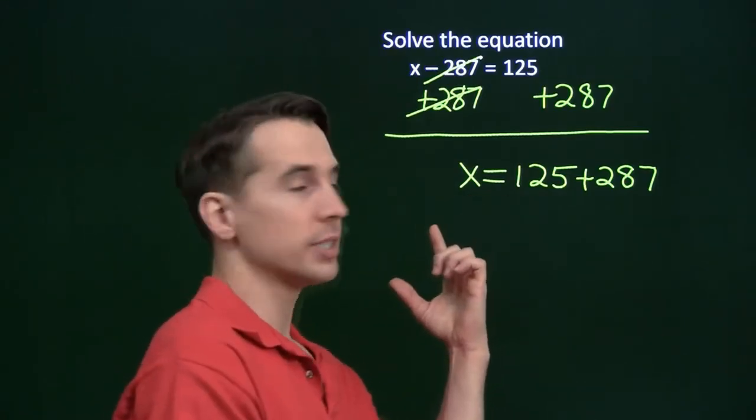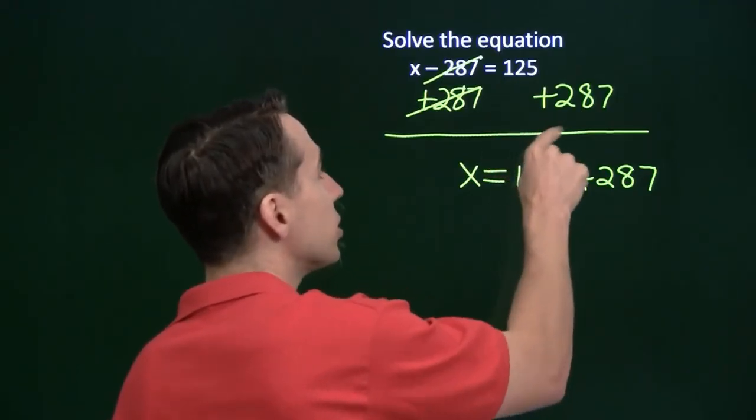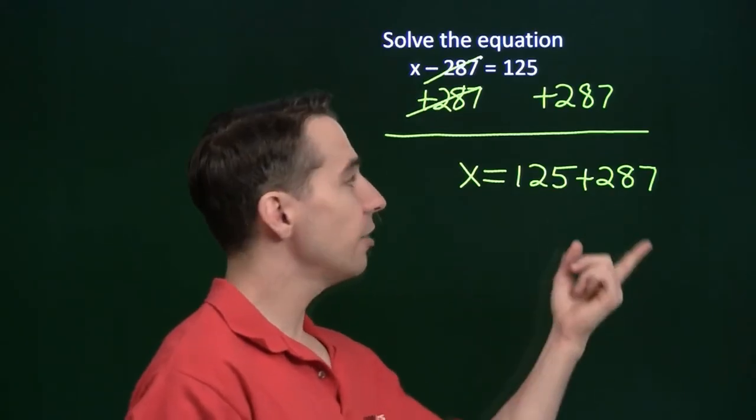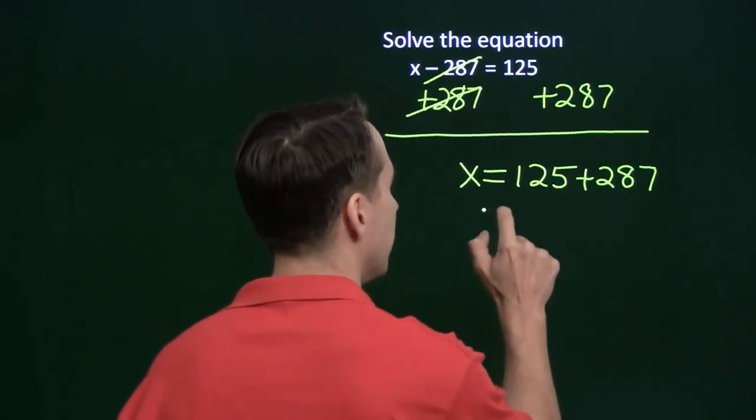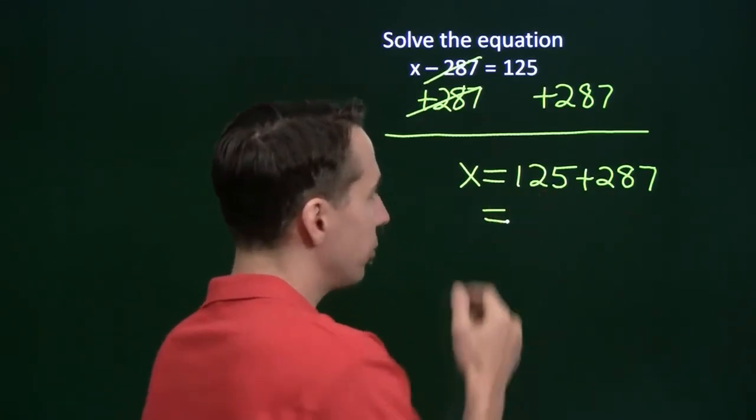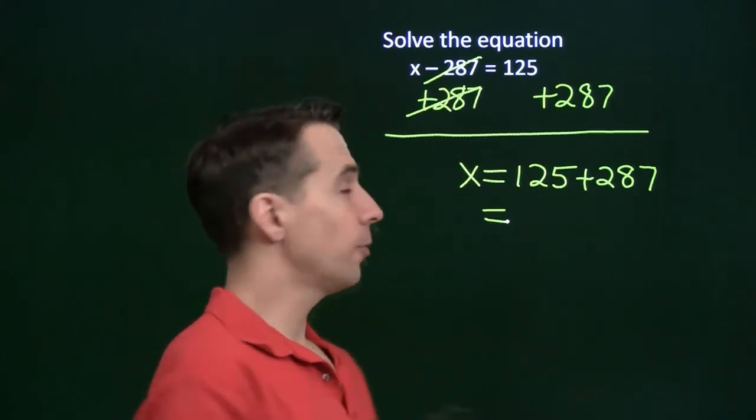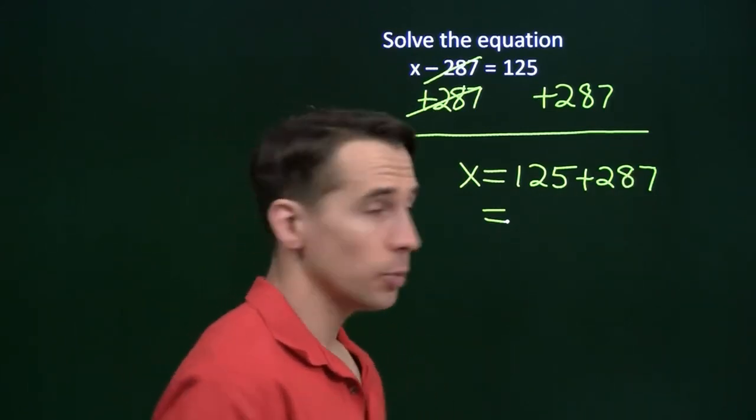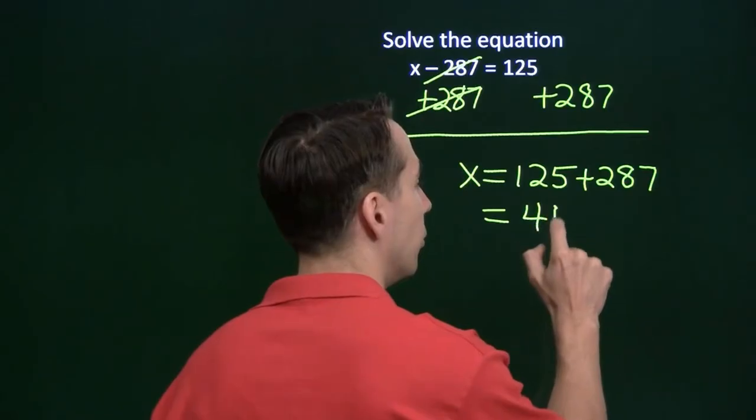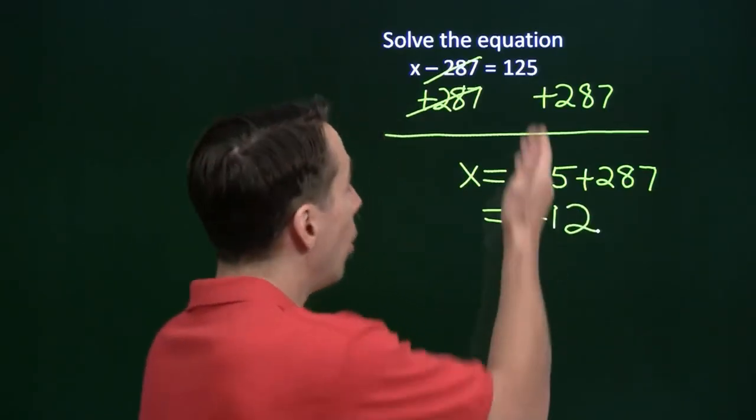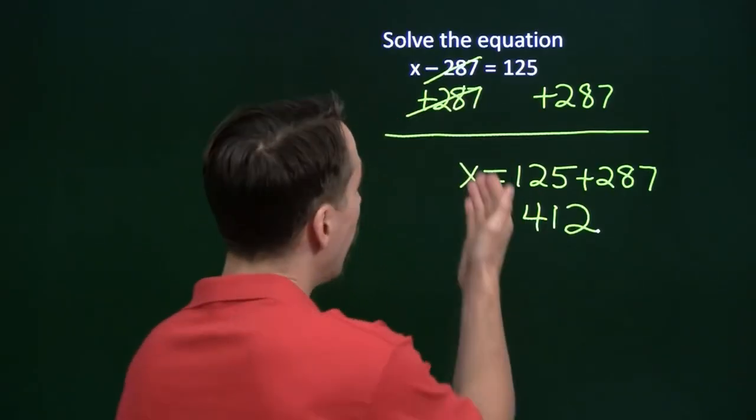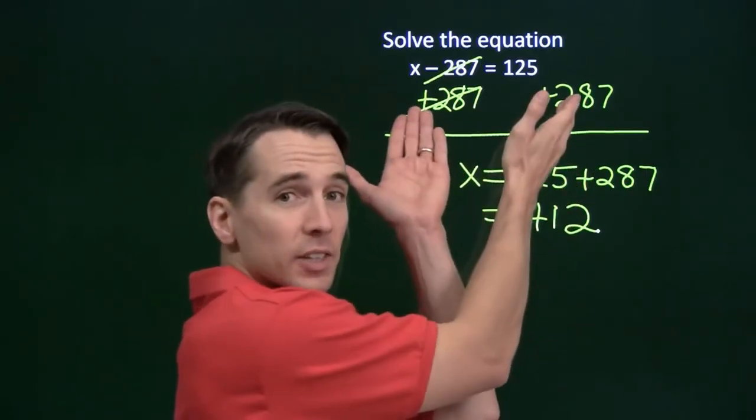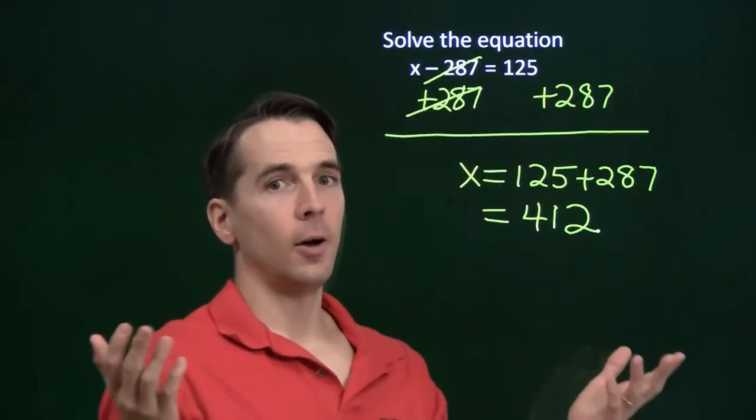It's got to be all alone on one side of the equation. On the other side of the equation, we have 125 plus 287. So we can add that up, 120 plus 280, that's 400. Five plus seven is 12, so we get 412. And sure enough, we've solved the equation by doing the same thing to both sides of the equation to get x all alone.